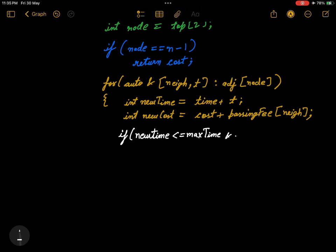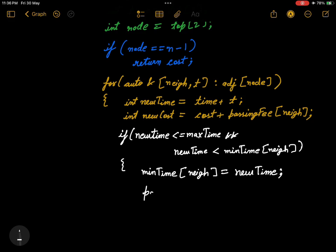Now we will check the condition: if the new time is less than or equal to max time, this is our first condition. And if the new time is less than the minimum time of the neighboring node, then we will relax it and assign the minimum time of neighboring node equal to new time. And also we will push it into the priority queue: the new cost, the new time, and the neighboring node. And that's it.